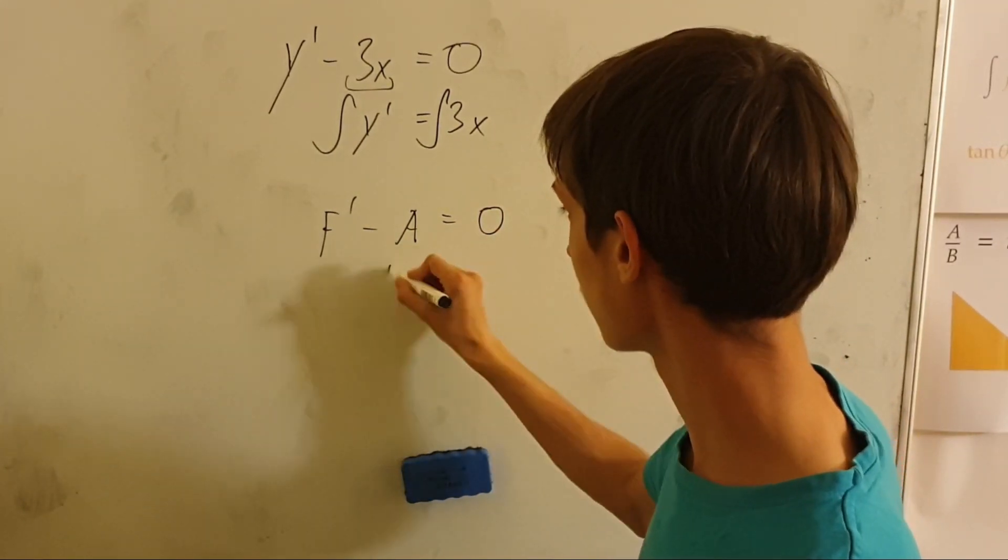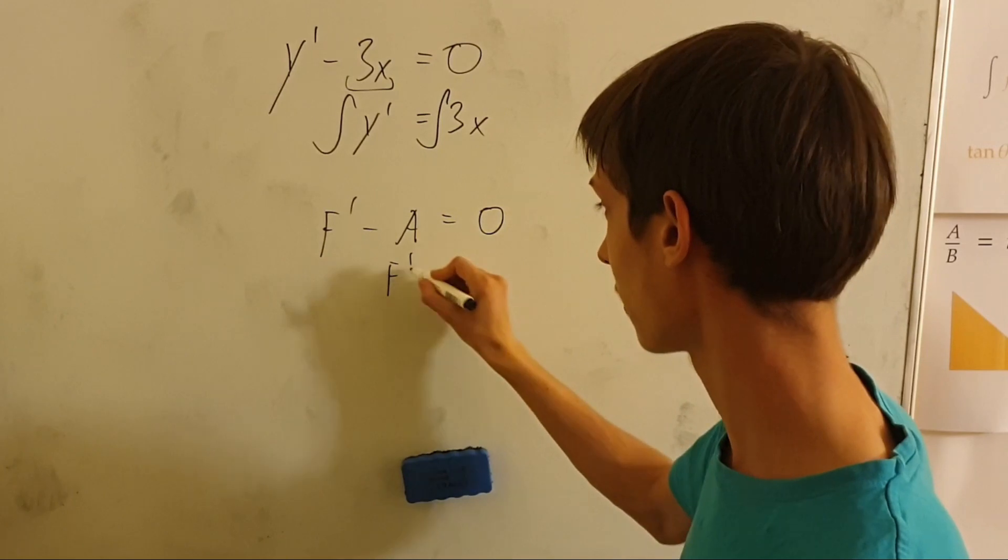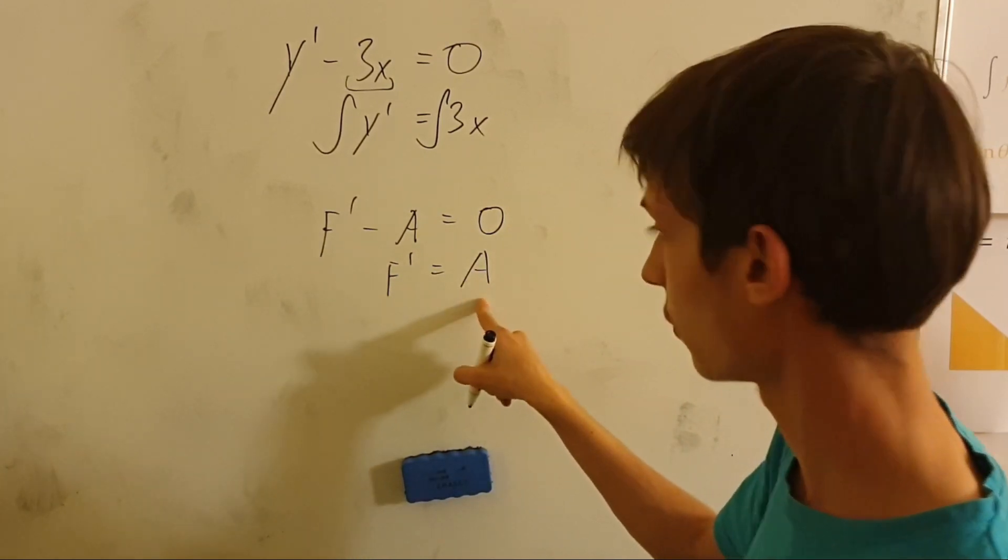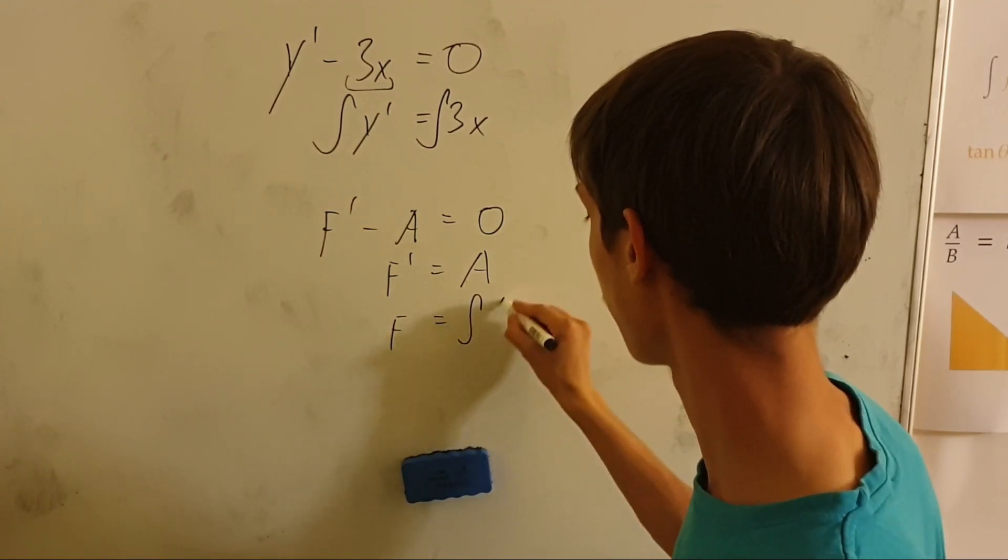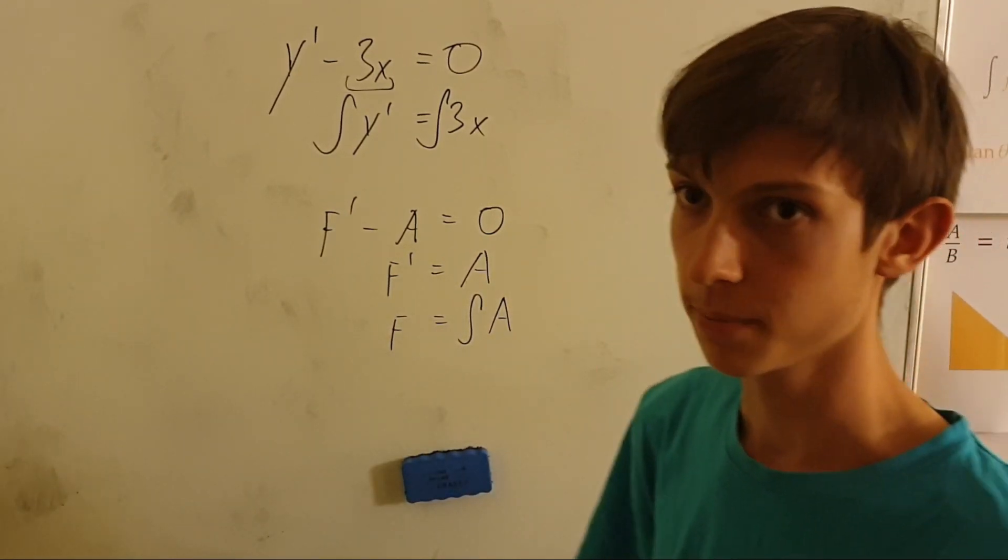And what we did is we added that a to the right side, so we got this. And then if we integrate both sides, we get that f is going to be equal to the integral of a.